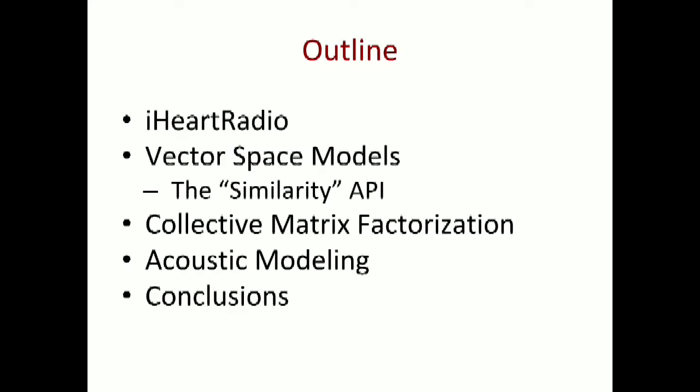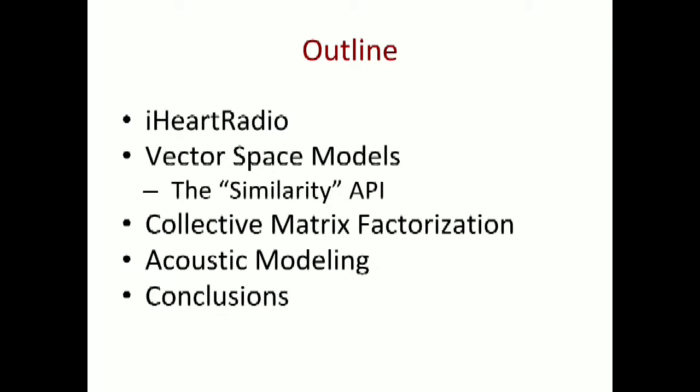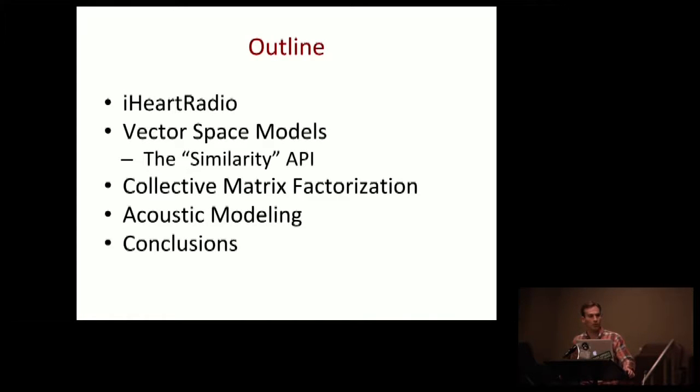We'll introduce vector space models in general, giving a brief overview. Then we'll introduce the API we've developed internally to access and manipulate this vector space. We'll talk about the types of vector spaces we use this API to manipulate, including collective matrix factorization — a slightly different flavor than normal collaborative filtering — and how we've developed an acoustic vector space. Finally, we'll make generalizations and conclusions from our work.